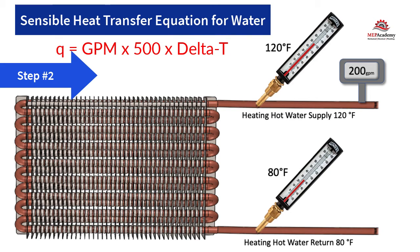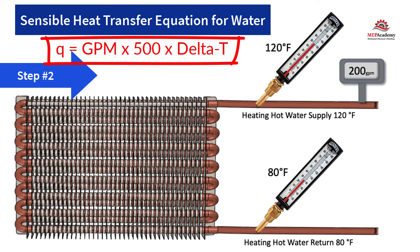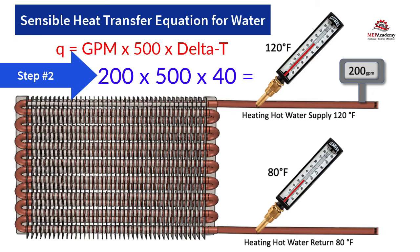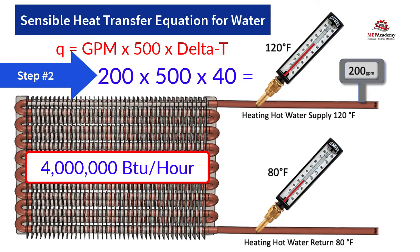Step two is to put all the known values into our formula and make the calculation. We have our formula: Q equals GPM times 500 times Delta T. Entering our values, we get Q equals 200 times 500 times 40, which equals 4 million BTUs per hour.